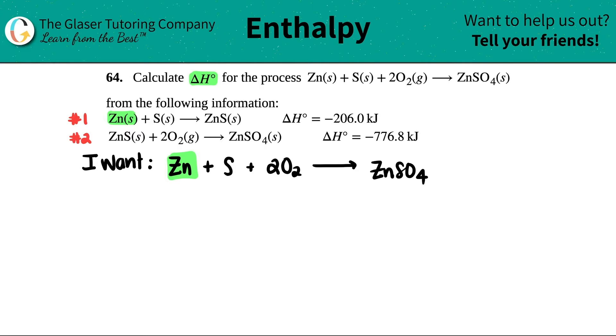Now, the placement and the amount has to match. What do I want? I want one zinc because I don't see a coefficient in the front, and I want it on the left-hand side. Does it match? Yeah. I have one zinc in this equation, and it's on the left-hand side. You see how there's one zinc, and it's on the left-hand side.